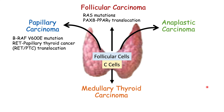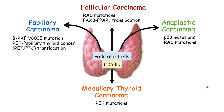For follicular carcinoma, important mutations include RAS mutations and PAX8 and PPAR gamma translocations. In anaplastic carcinoma, we can see P53 mutations and RAS mutations — P53 mutations are the most common mutation found in anaplastic carcinoma. In medullary thyroid carcinoma, it's going to be the RET mutations, which are responsible for MEN2A and MEN2B conditions.